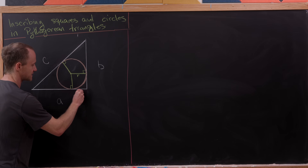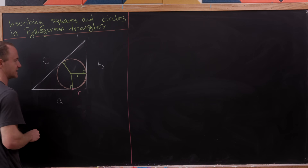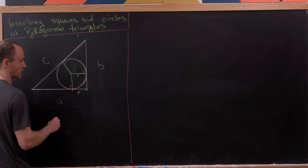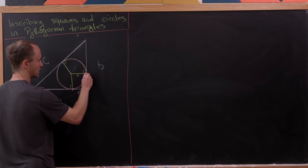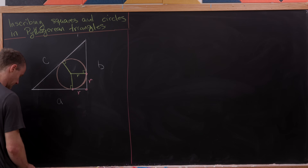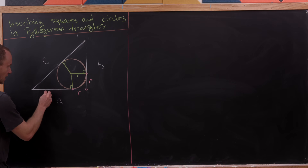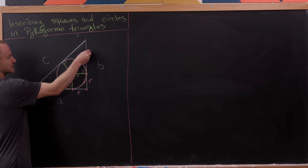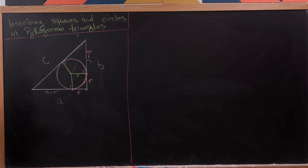Notice that this line segment from the point of intersection between the radius and the base has length r, and likewise this line segment here also has length r. So this obviously has length a minus r, and this obviously has length b minus r.